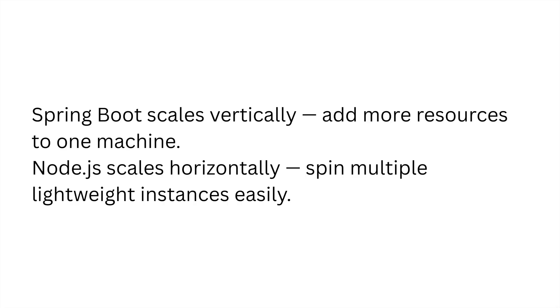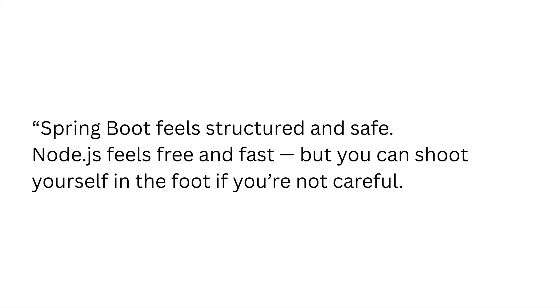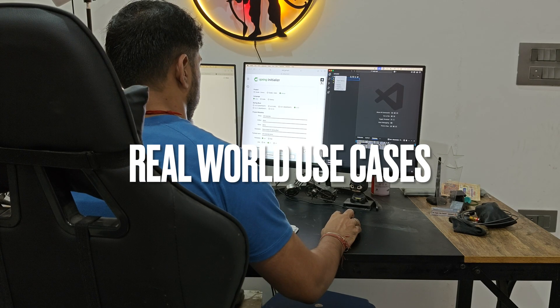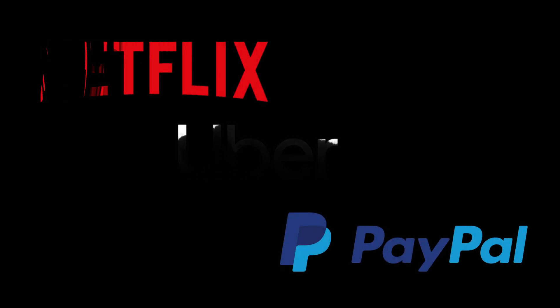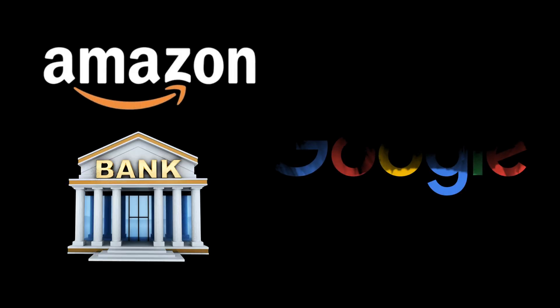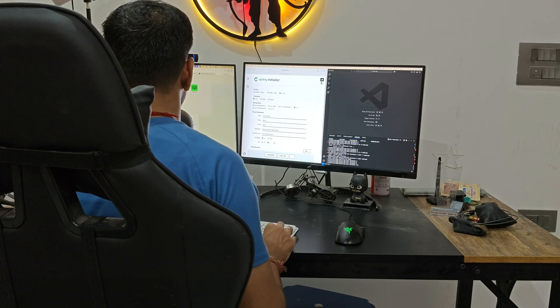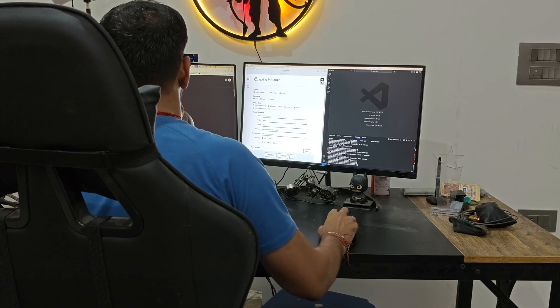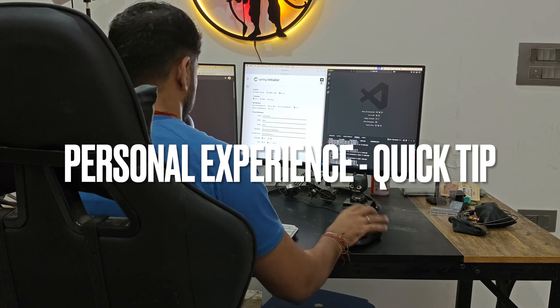Scalability: Spring Boot scales vertically by adding more resources to one machine; Node.js scales horizontally by spinning up multiple lightweight instances easily. Developer experience: Spring Boot feels structured and safe; Node.js feels free and fast, but you can shoot yourself in the foot if you're not careful. In the wild, Netflix, PayPal, and Uber use Node.js for fast lightweight microservices, while Amazon, Google, and banks use Spring Boot for large-scale enterprise-grade systems. It's not about better or worse — it's about what you're building.